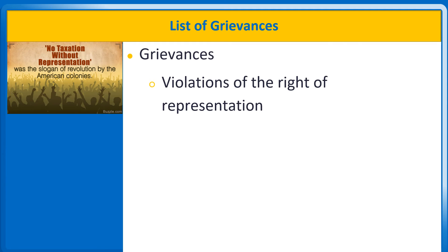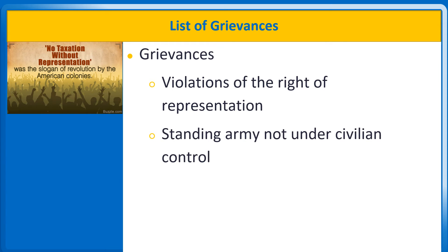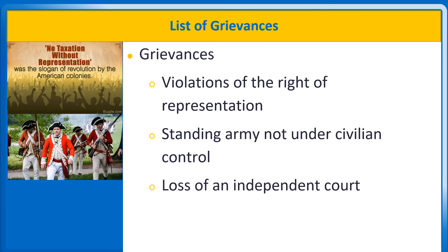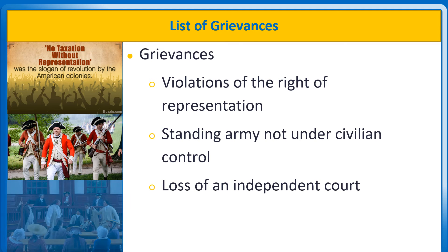Three complaints dominate the list. First, violations of the right of representation — this complaint comes up in 10 of the 27 charges against England, and it is by far the most intensely felt grievance. Second, a standing army not under civilian control; in particular, British soldiers acted in peacetime without the consent of the American legislatures, and five complaints are about the British military. Third, loss of an independent court.